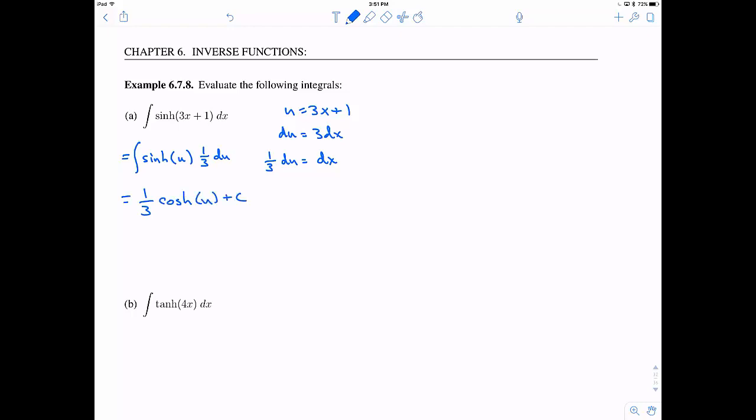And we can see that we can exchange this for hyperbolic sine of u times 1 third du. Now when we integrate, we have to be careful, right? Normally when you integrate just sine, it would be negative cosine. But because it's hyperbolic, remember it's positive. Then we substitute back in for our u. And that's the answer.